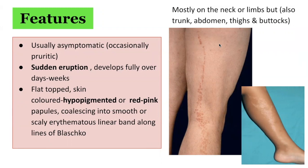Often, there is a single unilateral streak on an extremity along the lines of Blaschko, as you can see here in these images. Occasionally, there is a bilateral distribution pattern or multiple parallel bands. These lesions are less commonly found on the trunk or head and neck region. The eruption usually occurs suddenly and fully develops over days to weeks, and after several months to a year or more, it may undergo spontaneous resolution and heal with some post-inflammatory hypo or hyperpigmentation, particularly in skin of color.